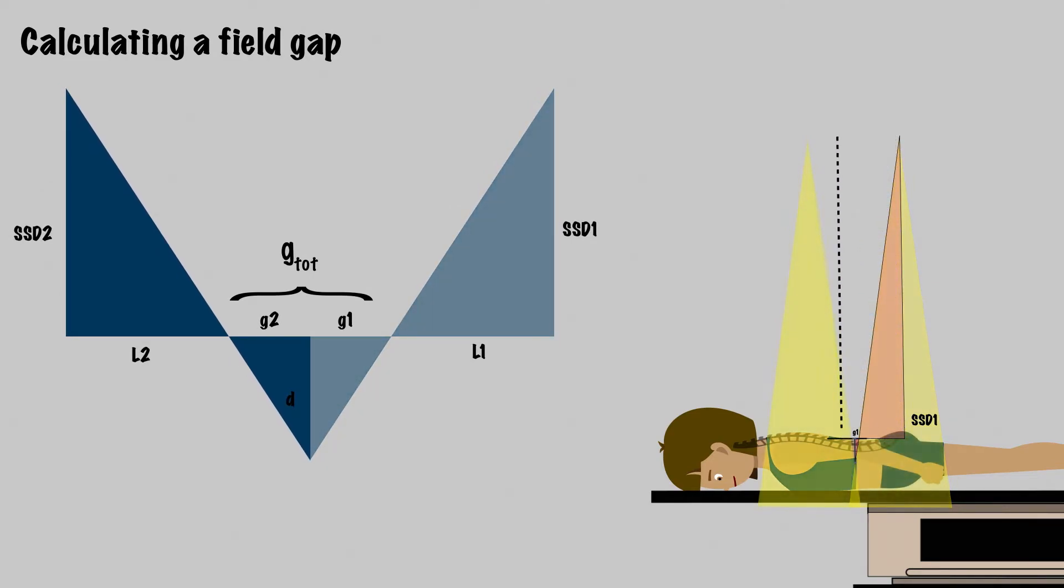To get the full gap, you'll have to repeat this calculation for the other side, which we'll call G2, using L2, which is the length from central axis to the edge of field 2. You could also have different SSDs for the second field, so we'll call this source to surface distance SSD2. Therefore, the total gap is the sum from G1 and G2, so our equation will look like this.